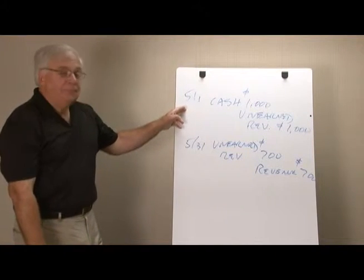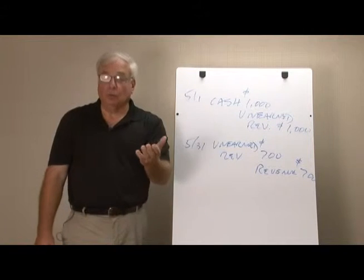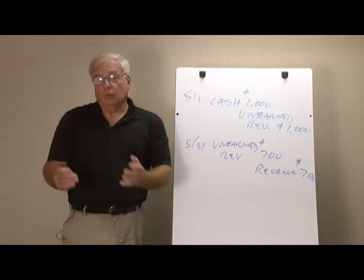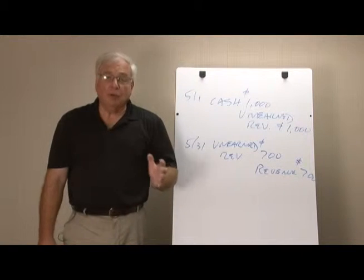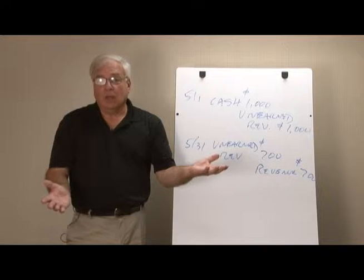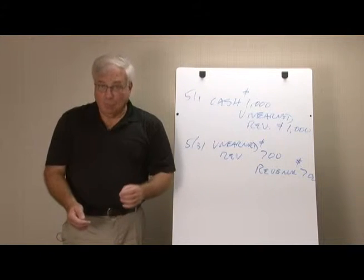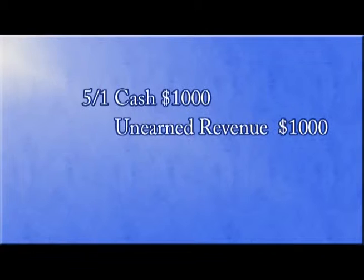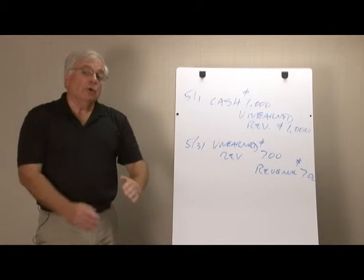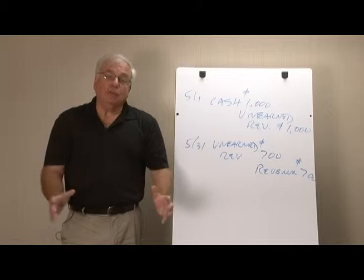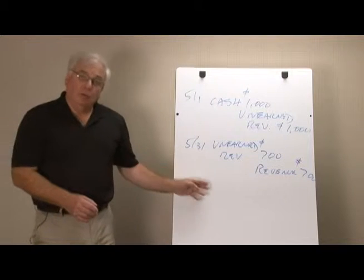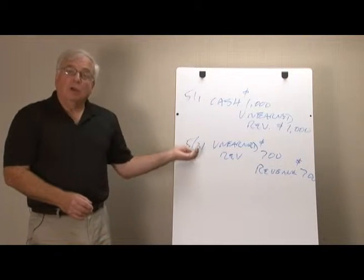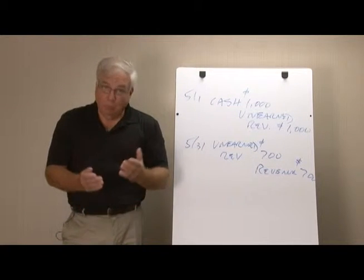When the money first comes in — the customer gives us a thousand bucks and we haven't done the work yet — we increase cash with the debit side of the entry. Unearned revenue is a liability account, increased by a credit entry, because we have the obligation to finish that work for the customer or else give them the money back. Now, if we did some of the work during the period, we are reducing the liability account — that's what the debit side of this adjustment is doing — and then the credit side increases the revenue account. In other words, we have fulfilled some of that obligation by working it off.